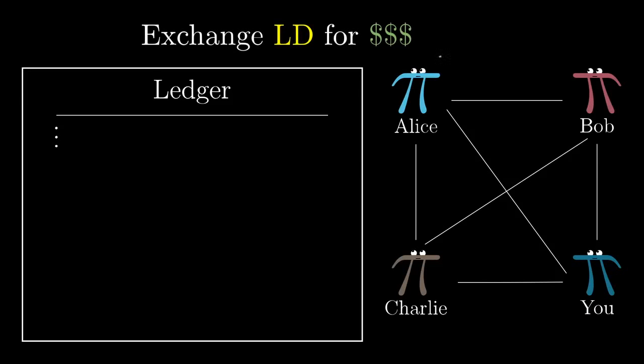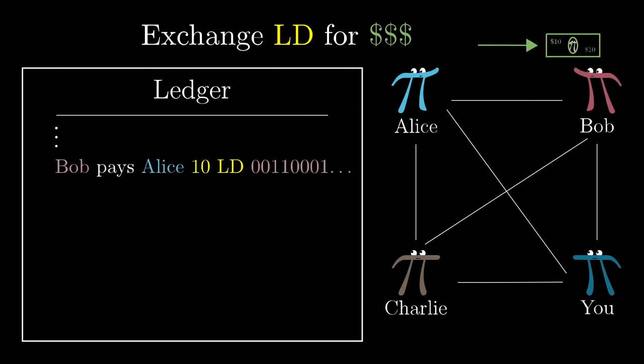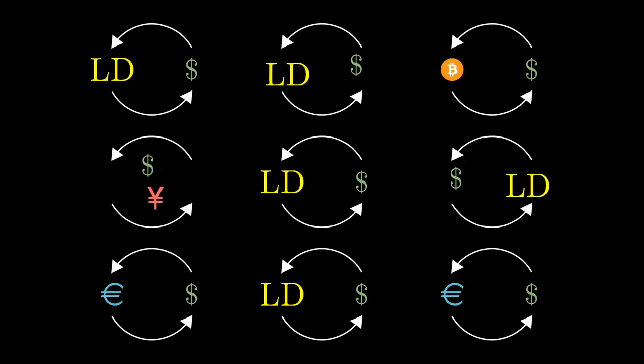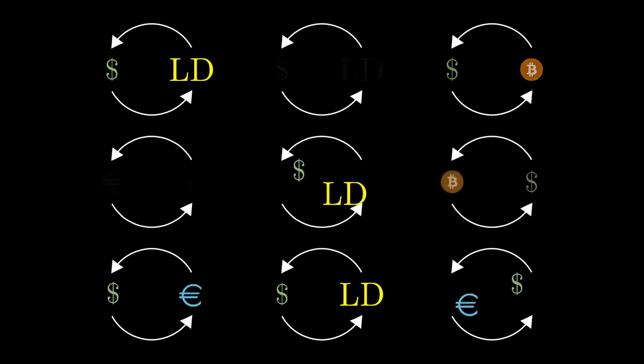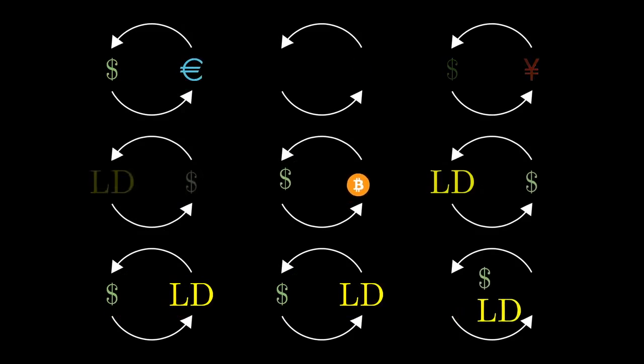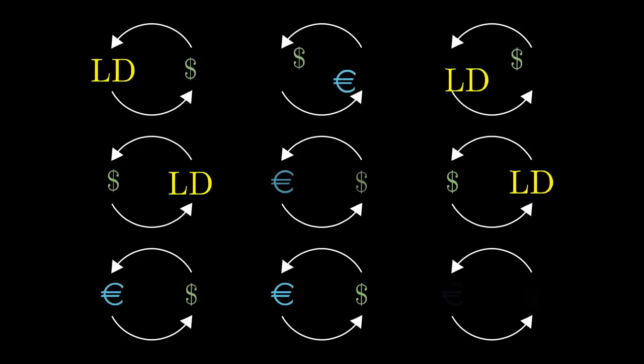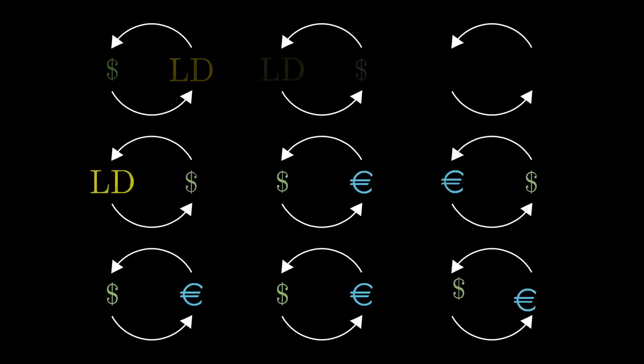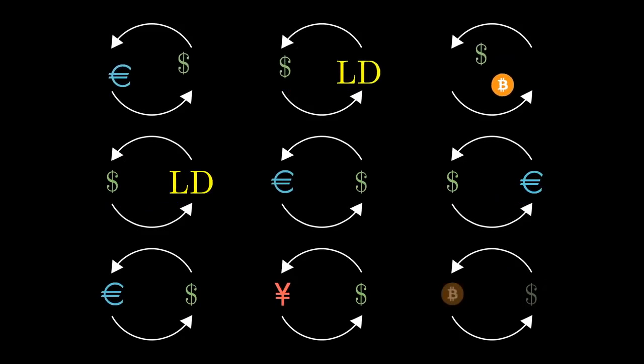For example, maybe Alice gives Bob a $10 bill in the real world, in exchange for him adding and signing the transaction, Bob pays Alice $10 to this communal ledger. But exchanges like that, they're not going to be guaranteed by the protocol. It's now more analogous to how you might exchange dollars for euros, or any other currency on the open market. It's just its own independent thing.